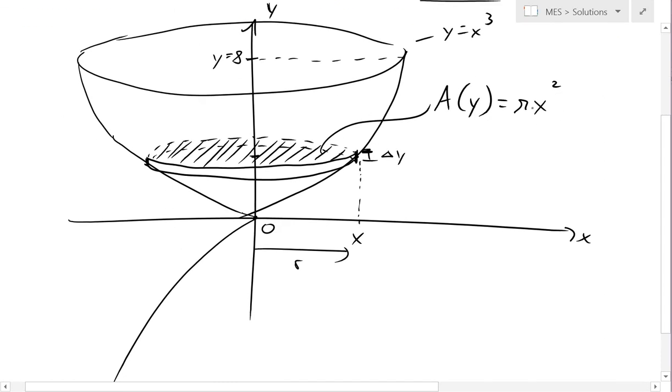But we've got to write this as a function of y instead, and we know that y equals x cubed, so we've got to write this as x squared, so we make both sides to the power of 2 over 3.